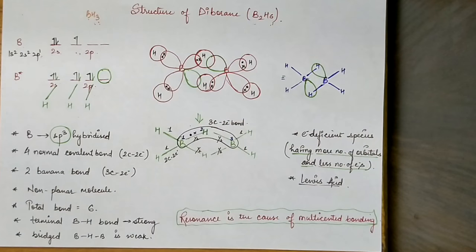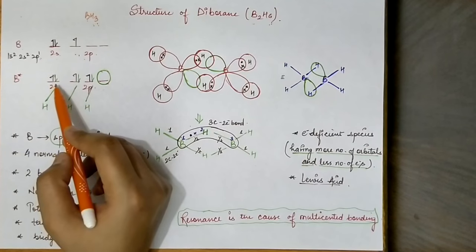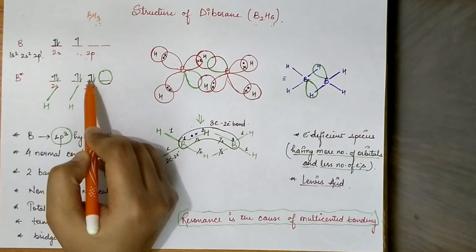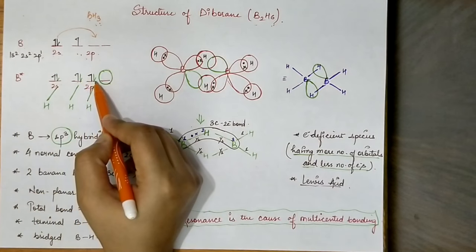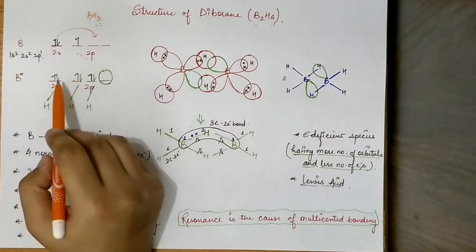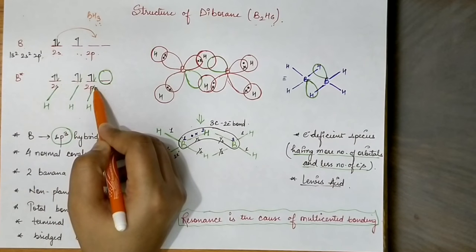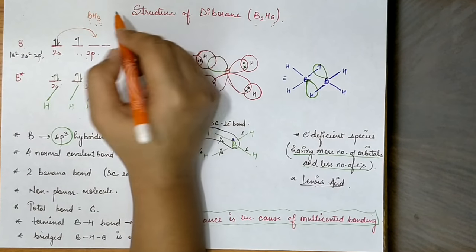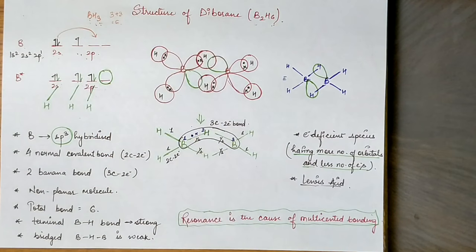If we look at the boron atom — which is the central atom — its electronic configuration is 2s² 2p¹. In the excited state, the electronic arrangement becomes one electron in 2s and two electrons in separate 2p orbitals. So BH3 would have a total of 6 electrons, and its octet is not complete.